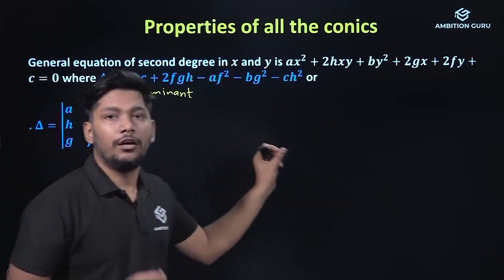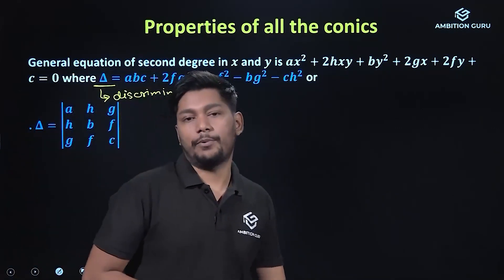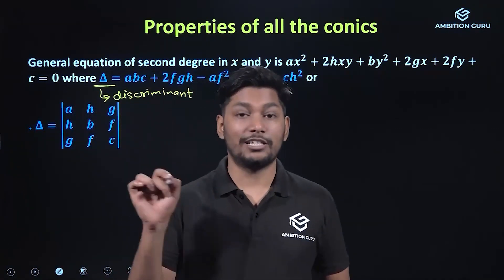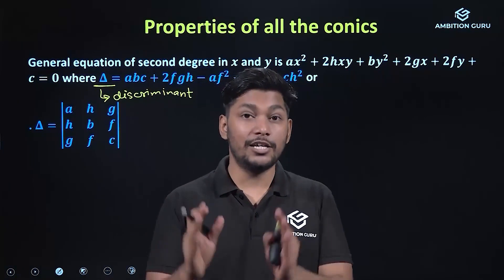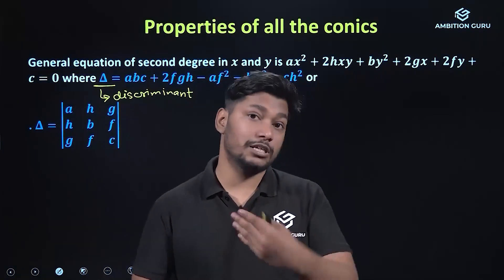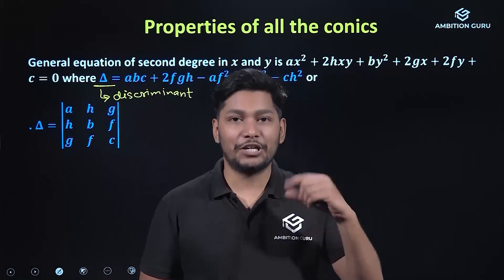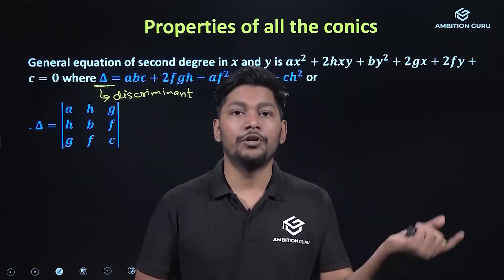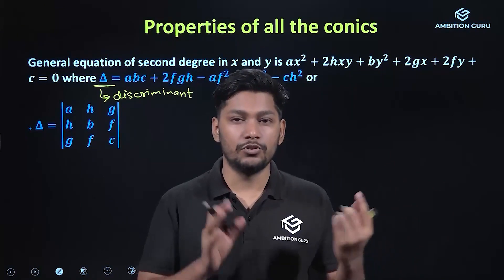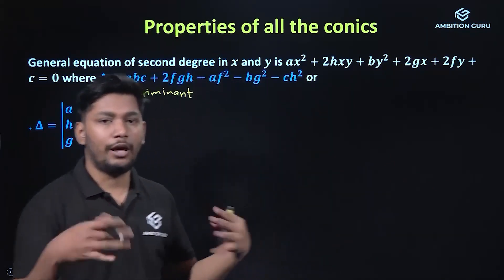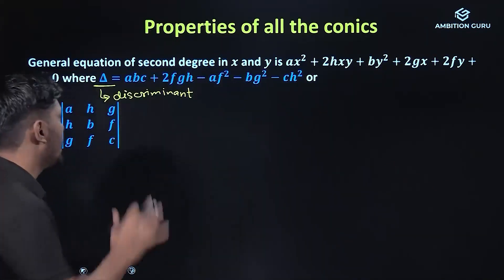We have a quadratic equation, and its discriminant is b² − 4ac. Using that discriminant, we can determine the nature of roots — whether they are real, equal, or imaginary.